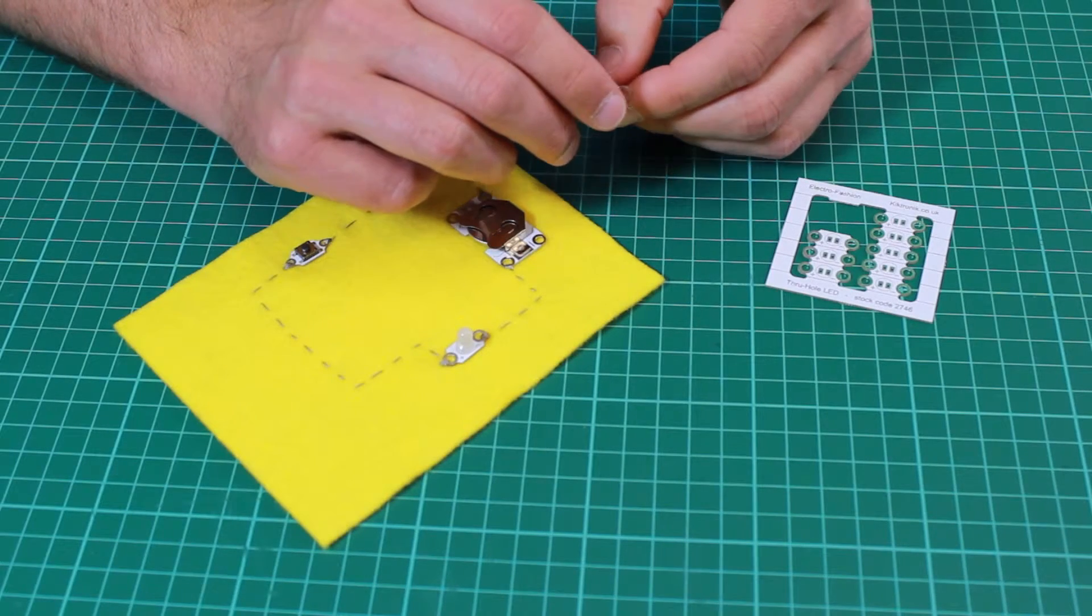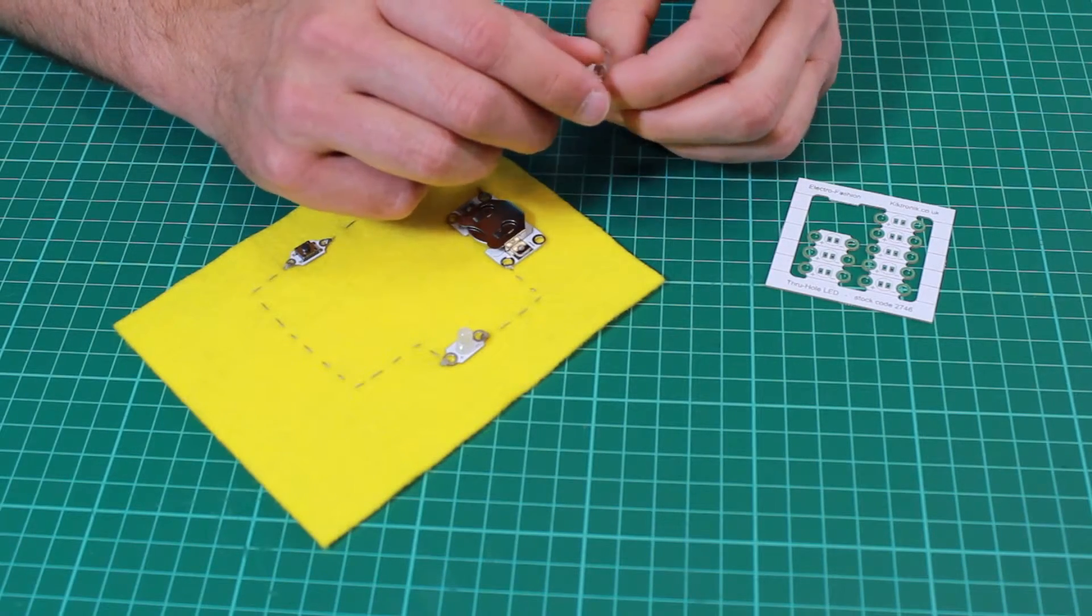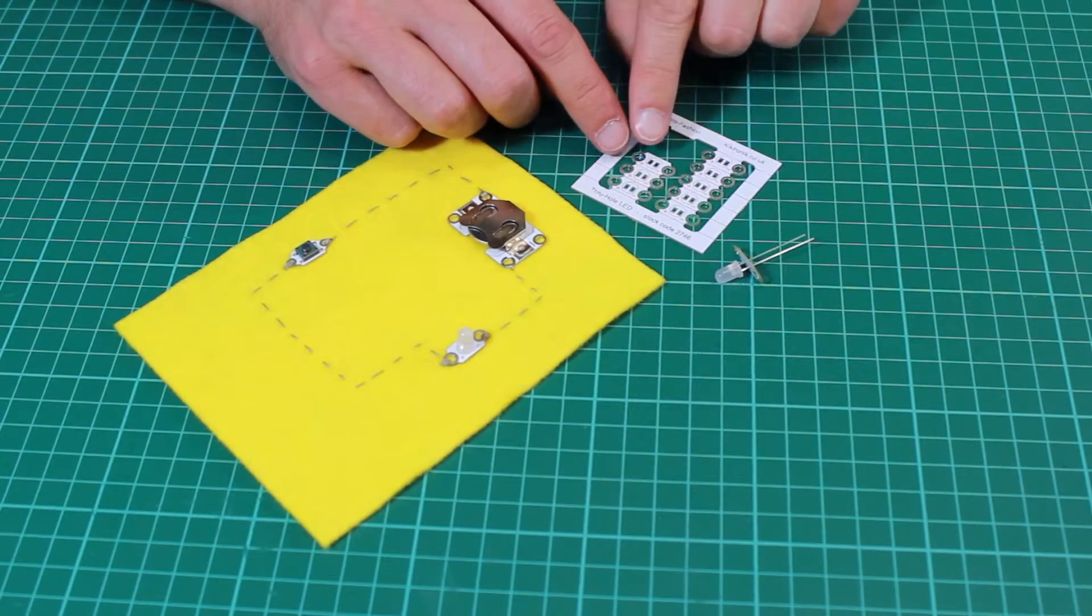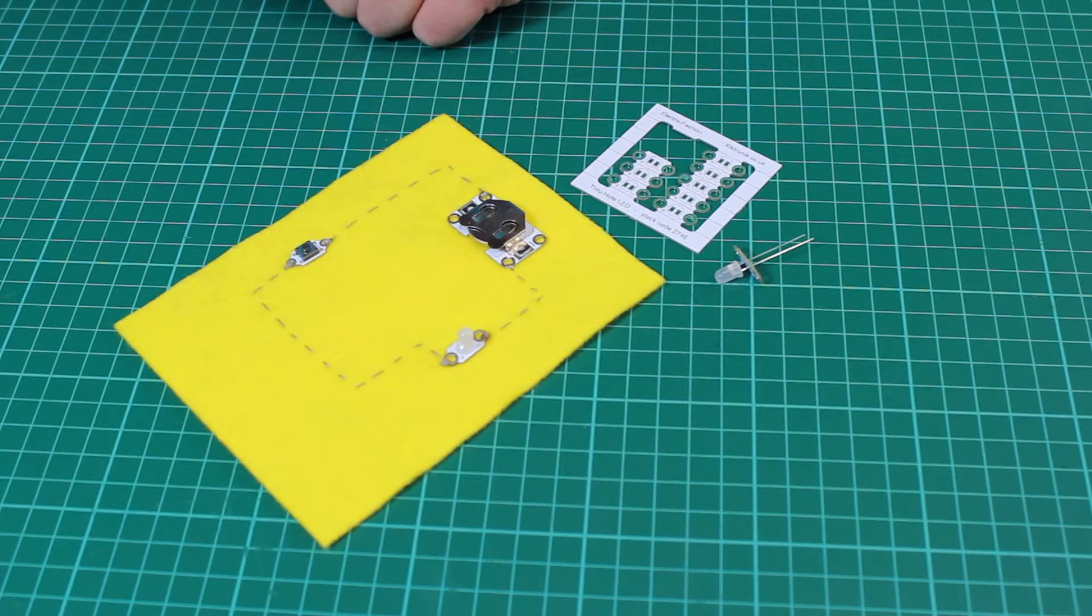The PCBs will take any standard 5mm LED, and they are supplied on these little panels of 10. You just snap the boards out one at a time as you use them.